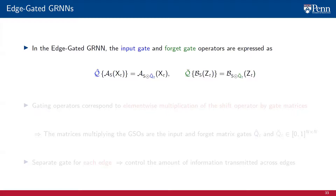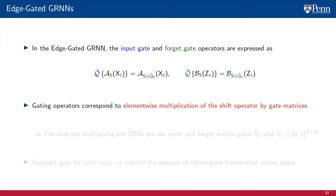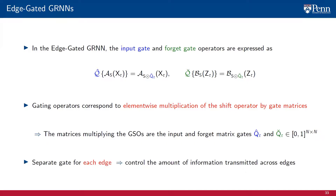For the edge gated GRNN, the input gate operator q-hat(t) is parameterized by a matrix q-hat(t). The gating operation corresponds to elementwise multiplication of the graph shift operator by the N×N gate matrices q-hat(t) and q-check(t), whose individual entries are values in the 0-1 interval. Therefore, there is a separate scalar gate for each edge. By scaling the edge weights, edge gates control the amount of information transmitted across edges and local exchanges.